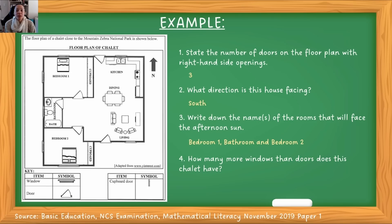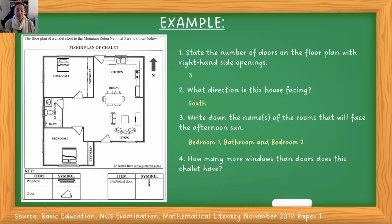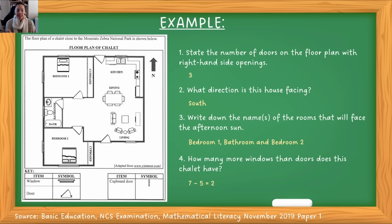Number four: how many more windows than doors does the chalet have? Here they're checking if you know how to identify and count the windows, how to identify and count the doors, and then calculating the difference by subtracting one from the other. So we've got five doors, and we've got one, two, three, four, five, six, seven windows. So seven minus five gives us two. There are two more windows than there are doors. Again, there were no major calculations required — you really just have to pay attention to what is given and what is being asked.